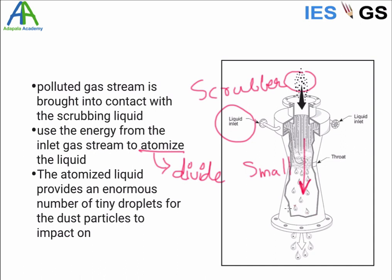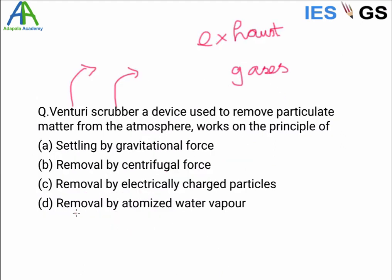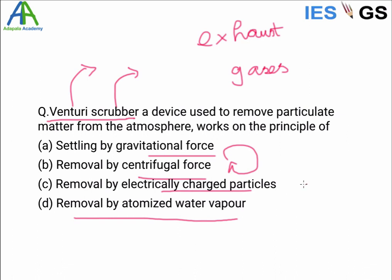As the velocity decreases, these particles settle down. The atomized liquid provides an enormous number of tiny droplets for dust particles to impact on. The answer is removal by atomized water vapor. Even without knowing the exact working of the venturi scrubber, we can eliminate the other options: it does not work by gravitational force, centrifugal force (which involves rotation), or electrically charged particles — that would require electrostatic force. So the answer is removal by atomized water vapor.